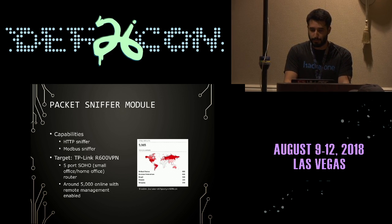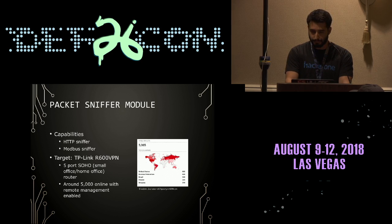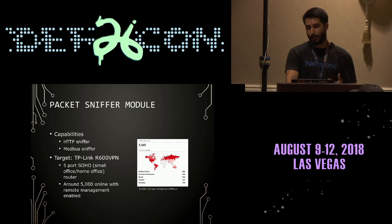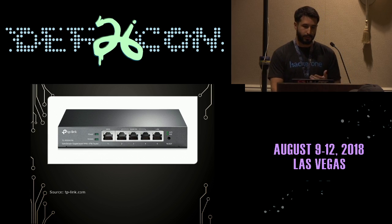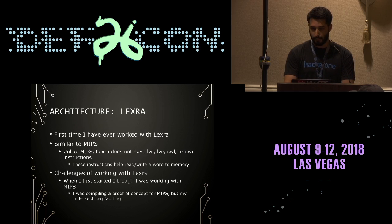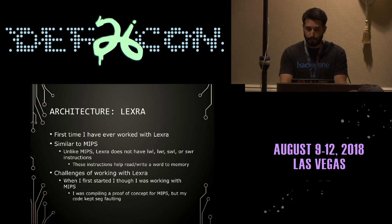Specifically, the packet sniffer module would log connection information about HTTP and certain Modbus connections. The packet sniffer module was targeting the TP-Link R600 VPN router, which is a five-port SOHO router. When we did a quick search on Shodan, we found around 5,000 of these devices online — but it's safe to assume there are a lot more, since Shodan was only showing ones with remote management enabled and accessible on the Internet.